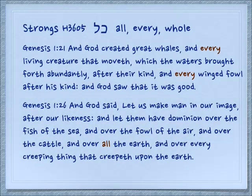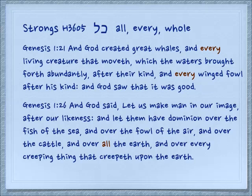The most basic meaning for kol is all, or every, or whole. Genesis 1:21: 'And God created great whales and every living creature that moveth, which the waters brought forth abundantly after their kind, and every winged fowl after his kind, and God saw that it was good.' Genesis 1:26: 'Let them have dominion over all the earth and over every creeping thing that creepeth upon the earth.'